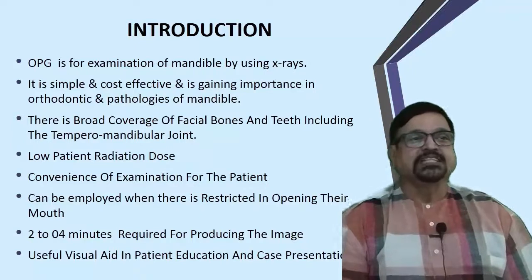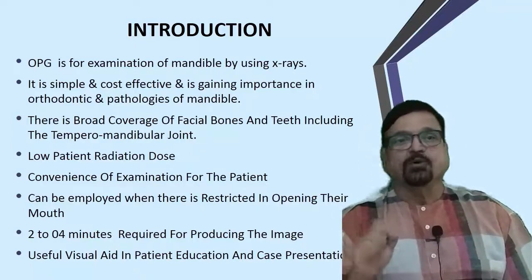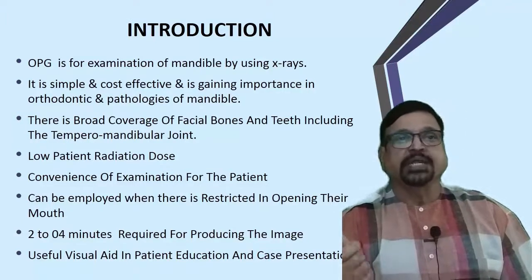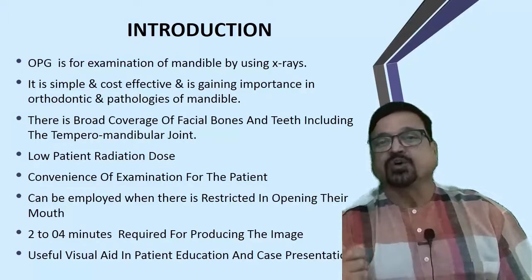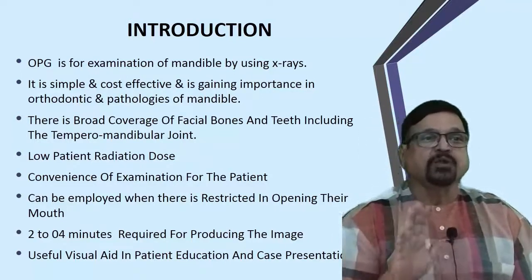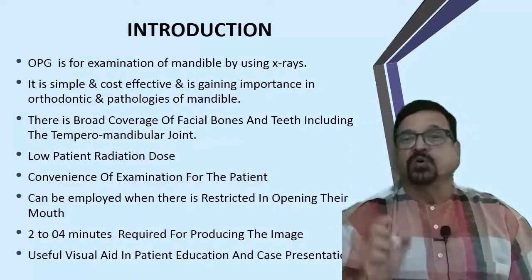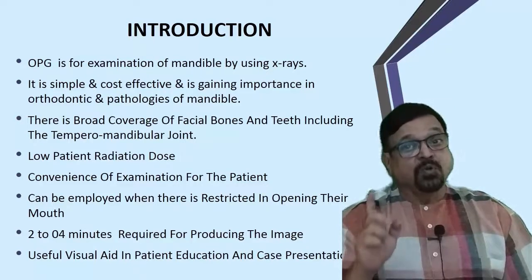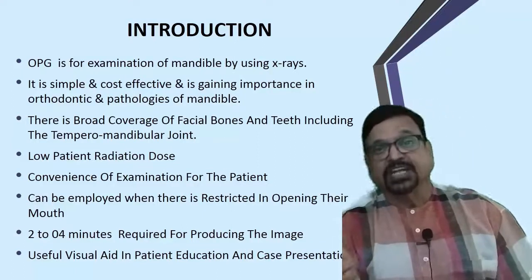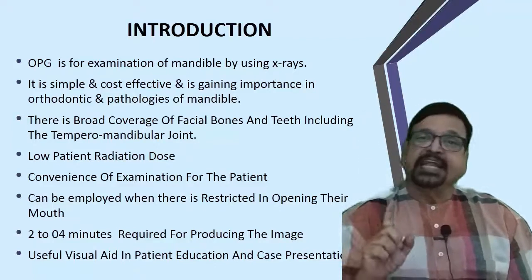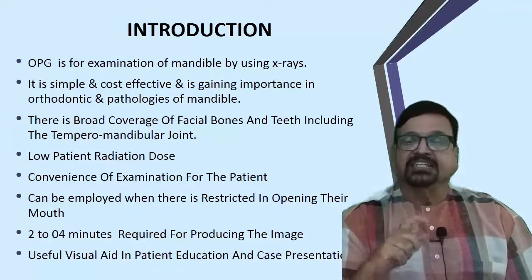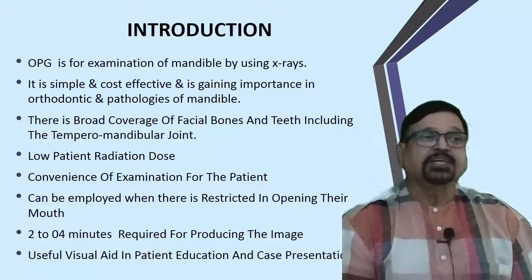Reading images by pathology on OPG is extremely interesting. There is a broad coverage of facial bones on OPG - we not only get teeth but also the TMJ, maxilla, and certain portions of the styloid process. These are the areas covered by OPG in addition to the teeth. Patient radiation dose is low. If we take 32 intraoral periapical radiographs it will give more exposure than one OPG.